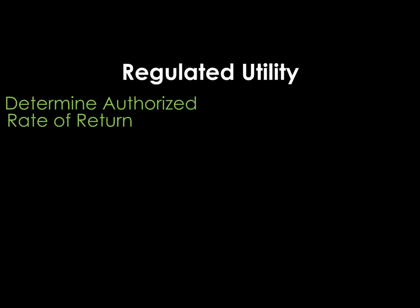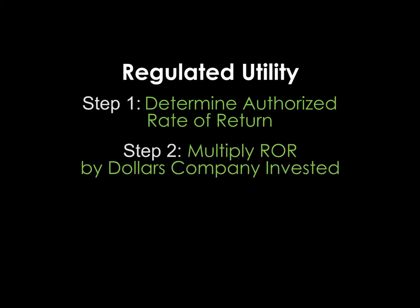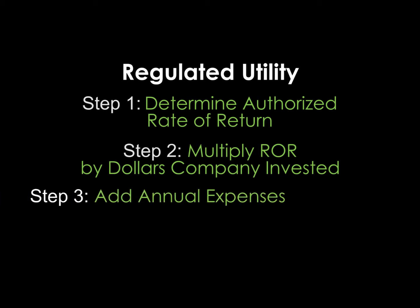A regulated utility, on the other hand, is exactly backwards. We start with determining an authorized rate of return — that's usually the part that seems the most complicated. You're going to multiply that by the amount of money that the utility invests in the company, and then add your annual expenses.